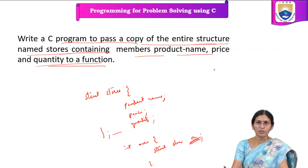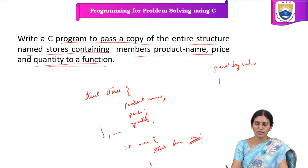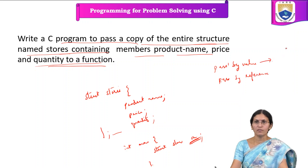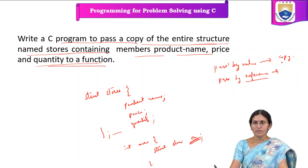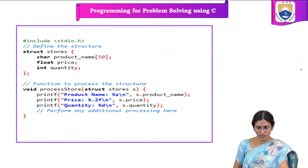Structures can be passed by two ways: first one is pass by value, and the next one is pass by reference. When we are passing the structure by value, we are actually passing a copy of the structure. When we are passing the structure by reference, we are passing the address of the structure.